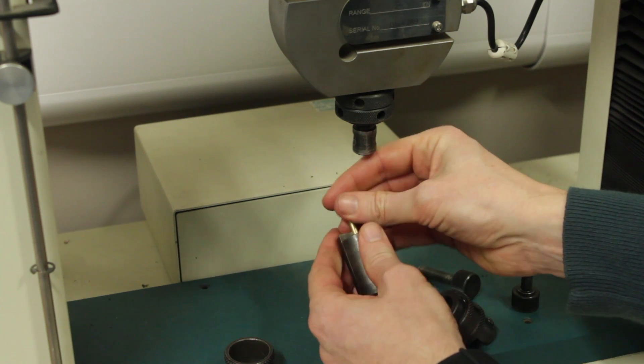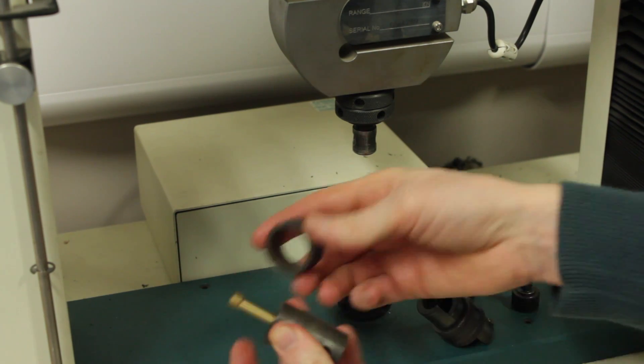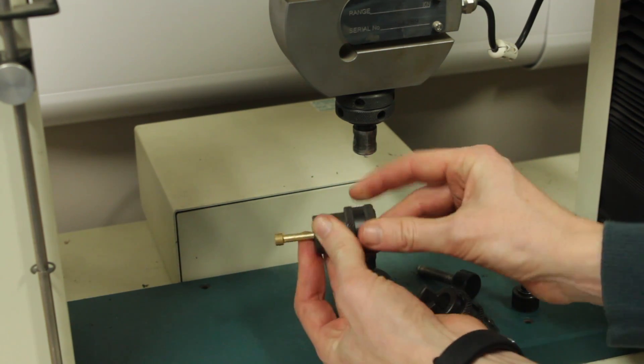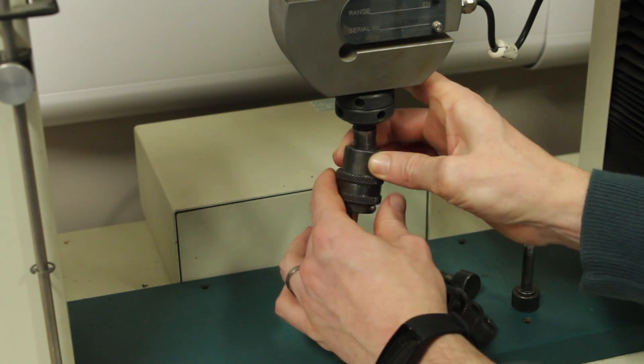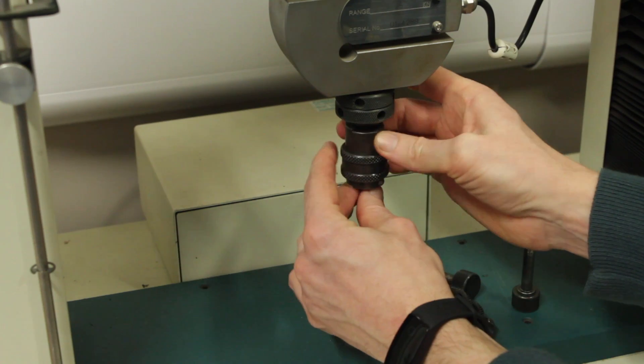Next we need to install one of the tensile test specimens. To do this, install the collet, add the collet ring and secure this entire assembly to the top stanchion by means of the pin.